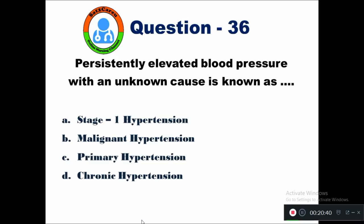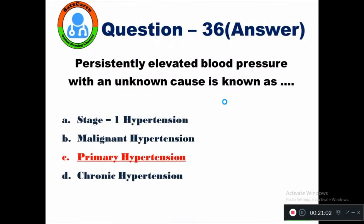Question 36: Persistently elevated blood pressure with an unknown cause is known as — option A stage 1 hypertension, B malignant hypertension, C primary hypertension, D chronic hypertension. Persistently elevated blood pressure with unknown cause is known as primary hypertension.